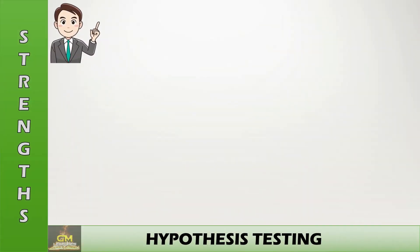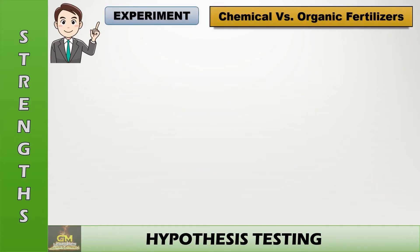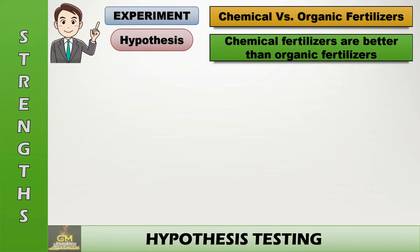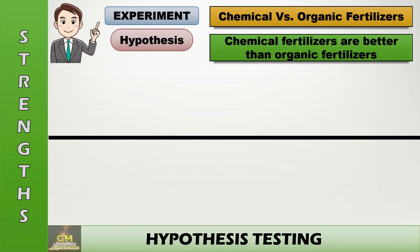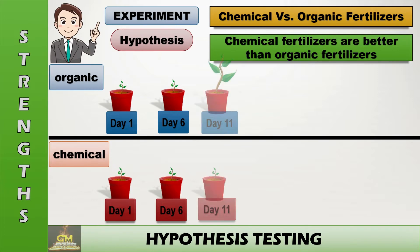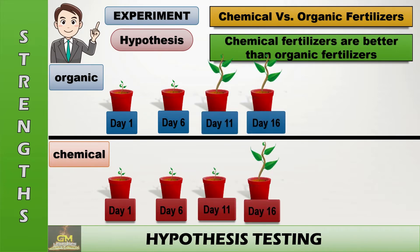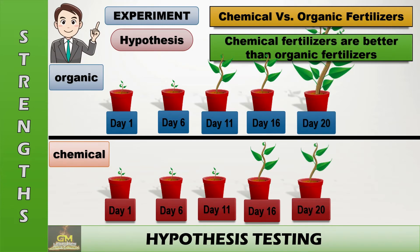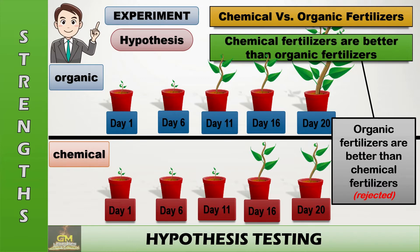In terms of hypothesis testing, let's consider this example. A researcher is conducting an experiment on chemical versus organic fertilizers. His initial hypothesis is that chemical fertilizers are better than organic fertilizers. To determine whether this hypothesis is true, he sets up two conditions: one plant using organic fertilizer and another using chemical fertilizer. Over a specified number of days, the researcher observes differences or similarities in plant growth between the two. At the end of the observation period, results are compared, and we can conclude that organic fertilizers are better than chemical fertilizers, thus rejecting the original hypothesis.